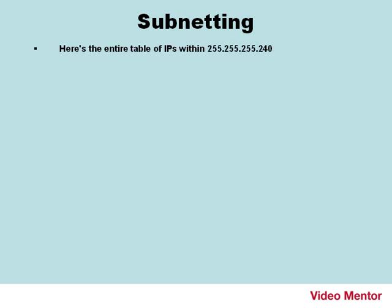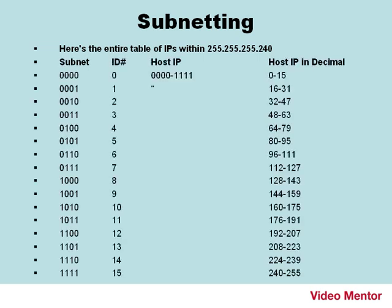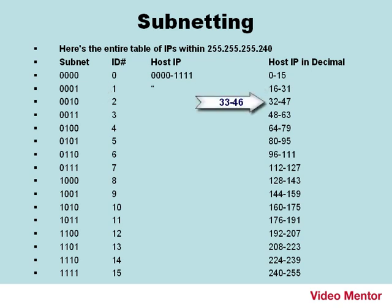Here's the entire table of IPs within 255.255.255.240. If you look at the left-hand column, we see the subnets shown in binary and in decimal — the ID numbers go from 0 to 15. For each of those subnet IDs, we can have hosts between 0 and 15. The usable hosts are a little less though, because we can't use the first or the last. For example, in subnet ID 1, the host IP range is 16 to 31, but 16 is the subnet ID and 31 is the broadcast, so the usable range is 17 to 30. For subnet ID 2, the usable range would be 33 to 46, and so on.